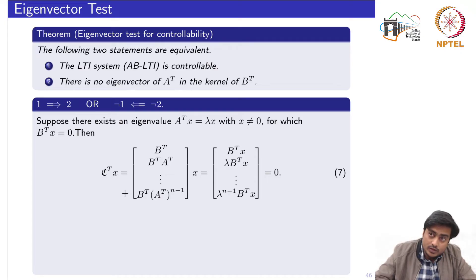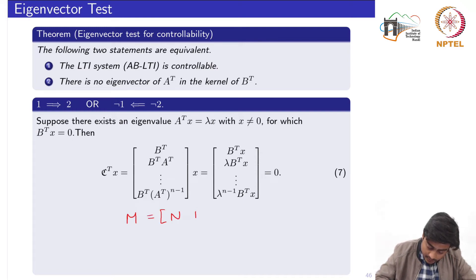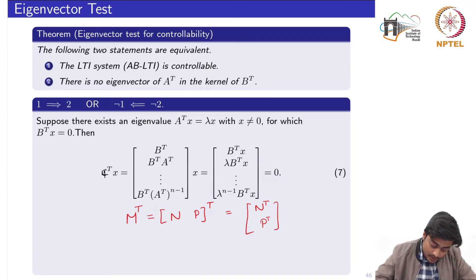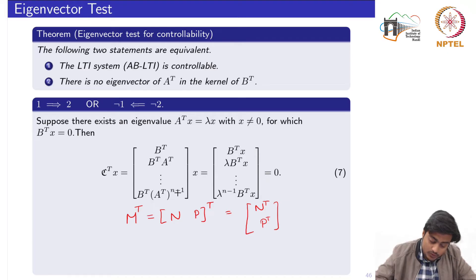Using the property of the transpose of a product — if M equals NP then M-transpose equals P-transpose N-transpose — the transpose of the controllability matrix becomes the block column: B-transpose, B-transpose A-transpose, up to B-transpose (A-transpose)^(n−1), all multiplied by x.